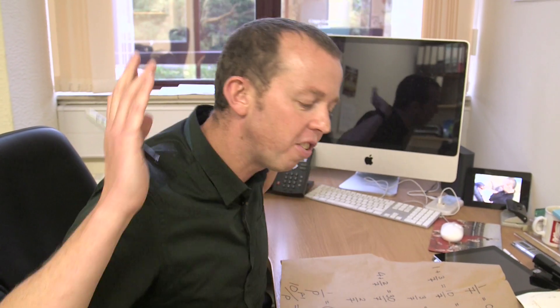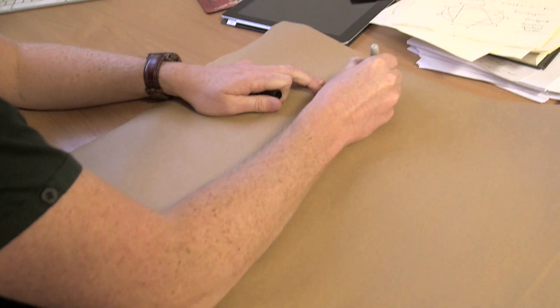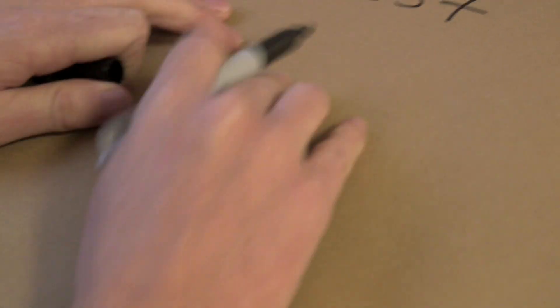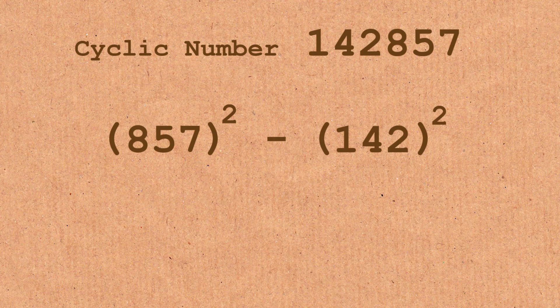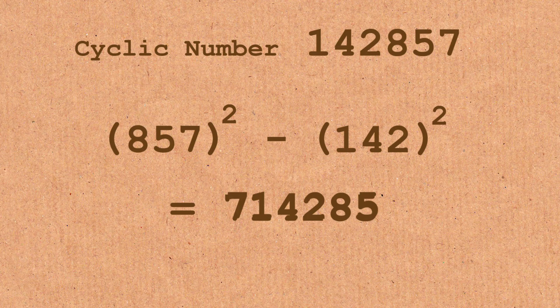It's an amazing number. It doesn't even stop there. There's one more quirkiness that I've got to show you. One, four, two, eight, five, seven. Now we're going to take the first three numbers. 142. And then square it to 857 squared. What do we get? 71428, 5. What's that? It's another permutation of our 142857. It's amazing.